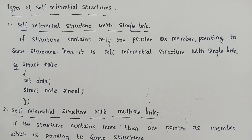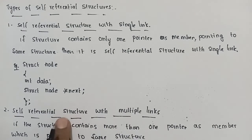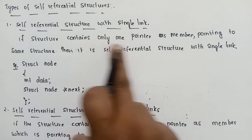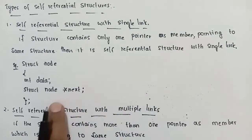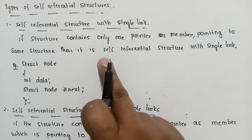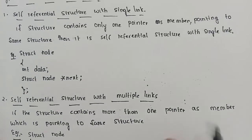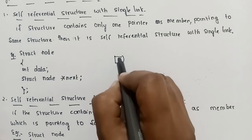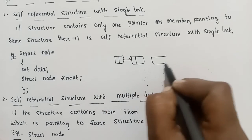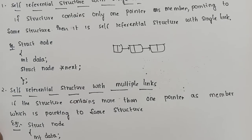There are two types of self-referential structures. First is self-referential structure with a single link. If the structure contains only one pointer as a member, then we use a self-referential structure with a single link. For example, in a singly linked list implementation, we use this type.